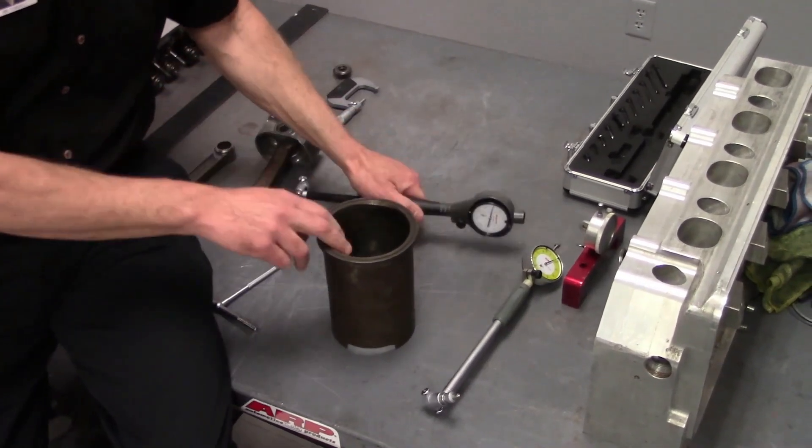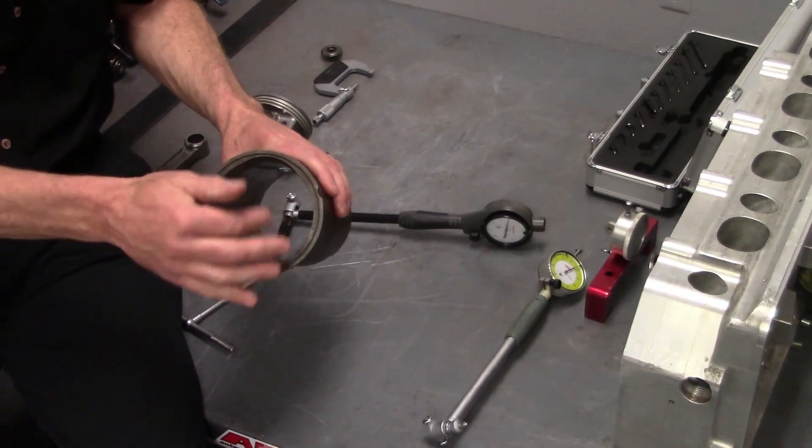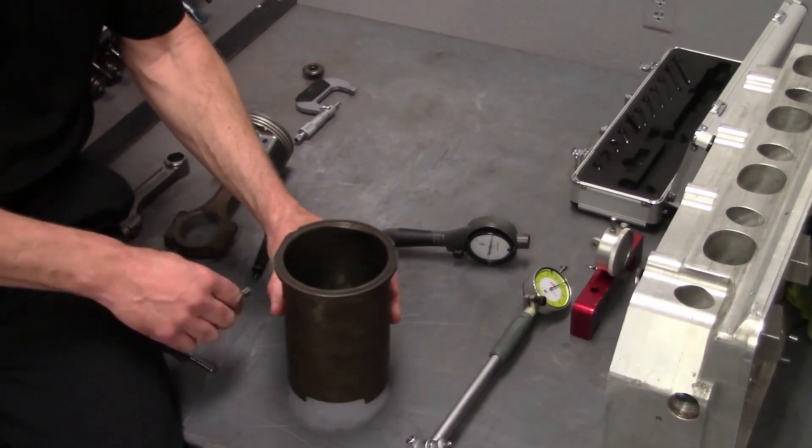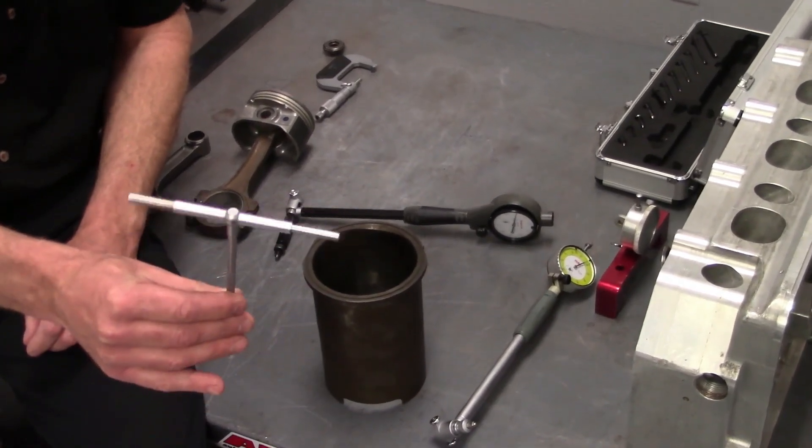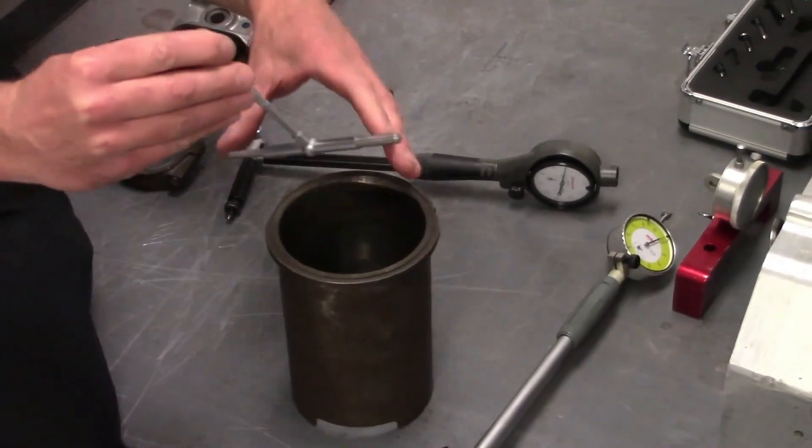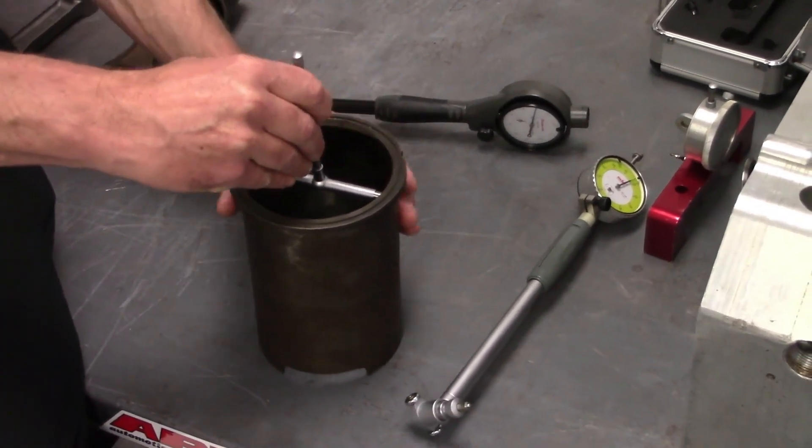The next thing we're going to do is measure our cylinder bores. I just have a cylinder sleeve here that we're going to use to demonstrate. You'll be working on the bores on your blocks. The first tool we're going to talk about is the T-gauge or telescopic gauge. We're going to put the telescopic gauge into the bore.